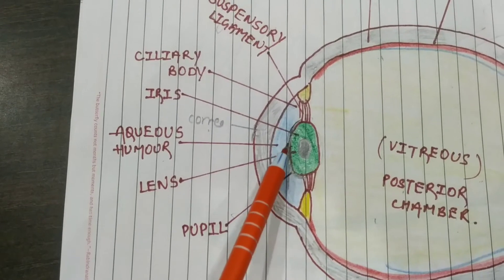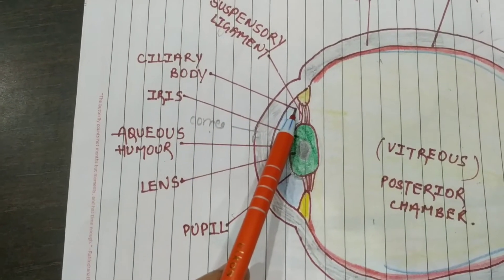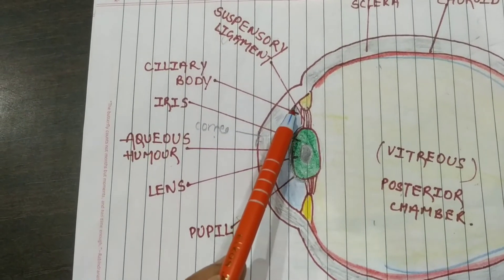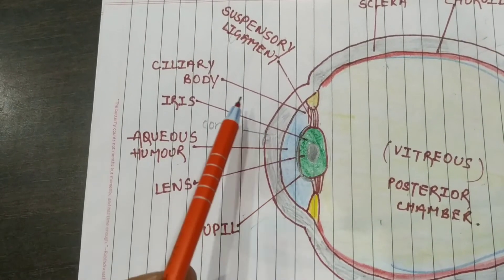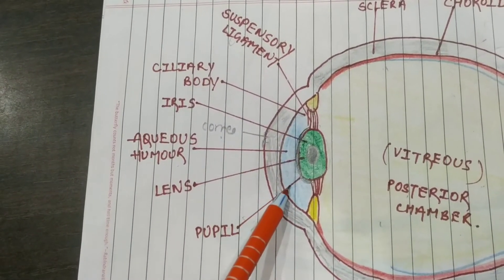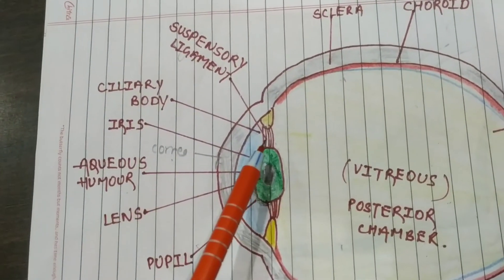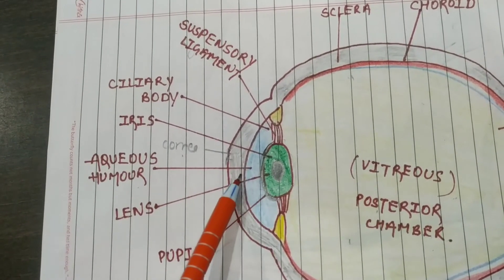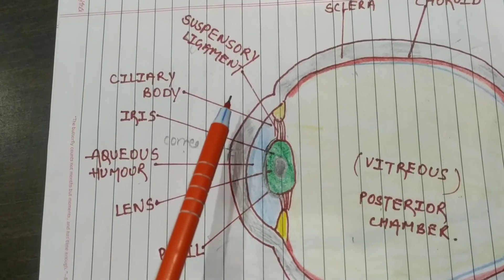Here is the ciliary body and suspensory ligaments. The ciliary body helps the lens attach with the ciliary muscles to remain in position. The ciliary body also produces aqueous humor. Aqueous humor is a watery fluid of the eye — the anterior fluid of the eye — which nourishes the lens as well as the cornea. Here are the suspensory ligaments that hold the lens to the muscles.